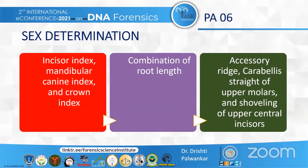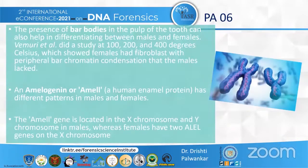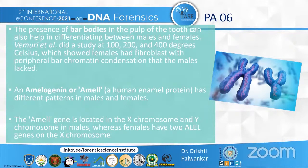As age increases, changes such as attrition and erosion are seen, and these are individualistic features that aid in identification. The presence of Barr bodies in the pulp can also help differentiate between males and females. Vemuri et al. conducted a study at 100, 200, and 400 degrees Celsius, which showed females had fibroblasts with peripheral Barr chromatin condensation that males lacked. Amelogenin, a human enamel protein, has different patterns in males and females: it is located on both the X and Y chromosomes in males, whereas females have two alleles on the X chromosome.